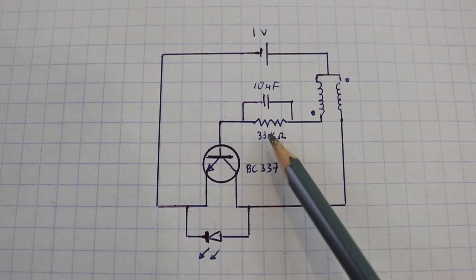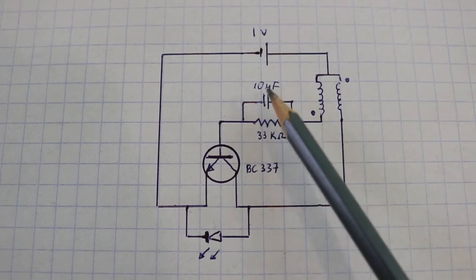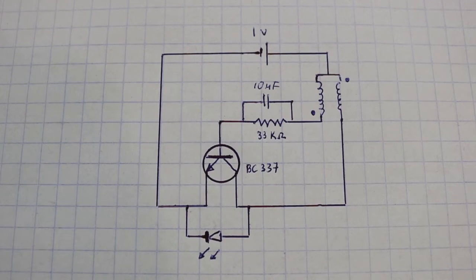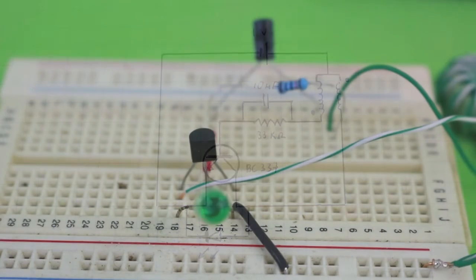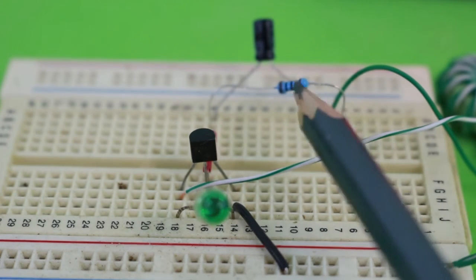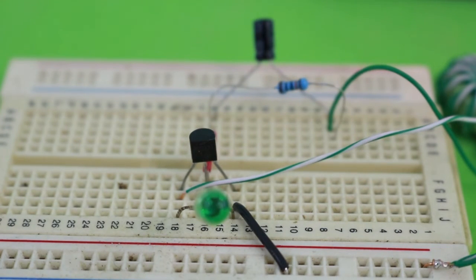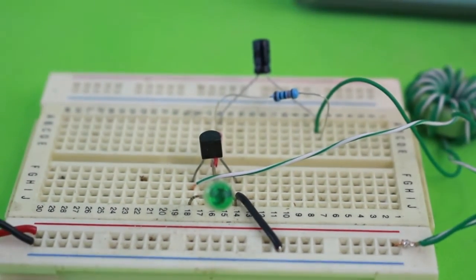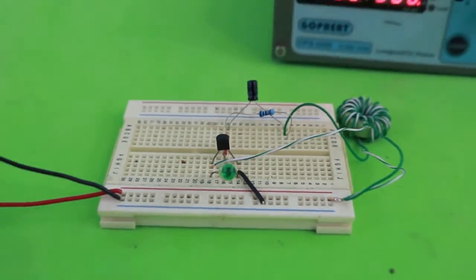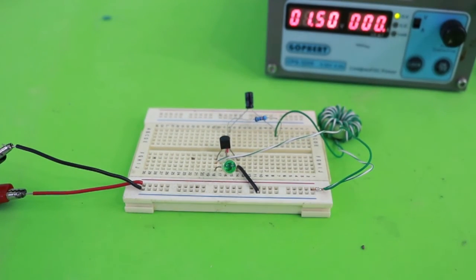A lower resistance or lower capacitance or both will increase the frequency and the LED will blink faster. I have changed the resistor of 33 kilo ohms for a new one of 100 kilo ohms. And we can see the LED blinking at a slower rate using 1.5 volts than when we were using the 33 kilo ohm resistor.